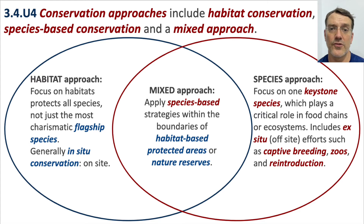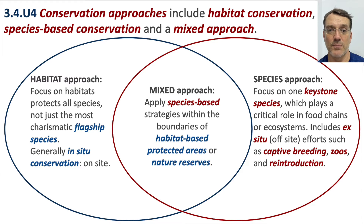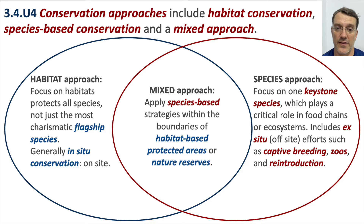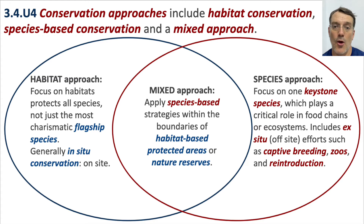One of the things you'll probably be asked to do on an ESS exam, either in Paper 1 or Paper 2, is to discuss or evaluate habitat-based approaches versus species-based approaches to biodiversity conservation. The habitat approach focuses on protecting the entire habitat and all of the species that live there. The species-based approach is narrowly focused on target species, generally ones that are critically endangered or near extinction. Both approaches have benefits and limitations, so most conservation efforts fall somewhere in the middle — a mixed approach — using the strengths of each to offset the weaknesses of the other.